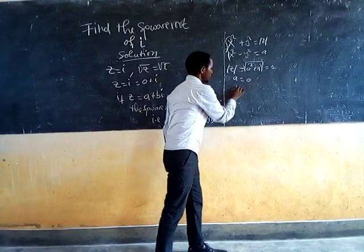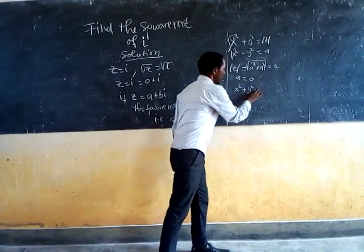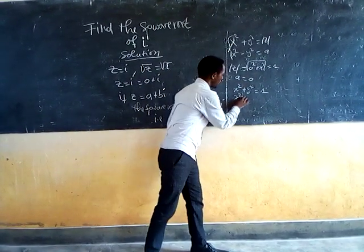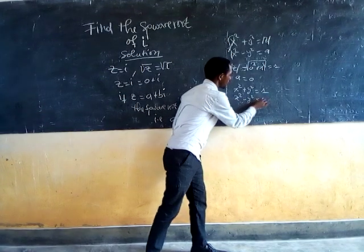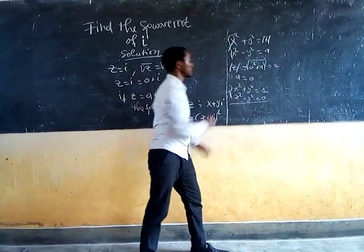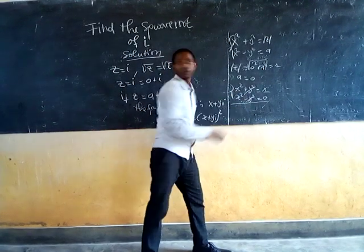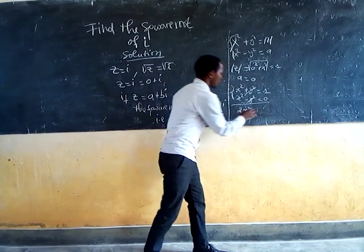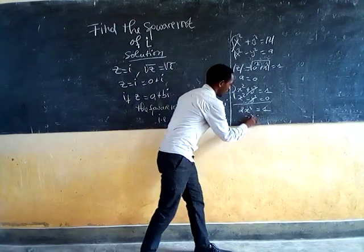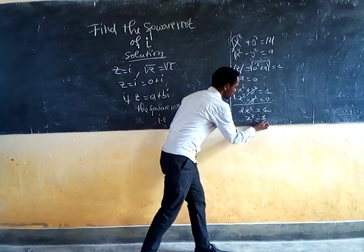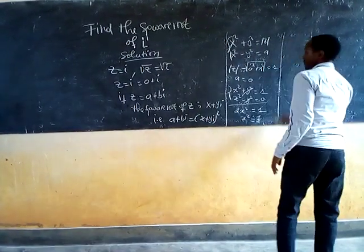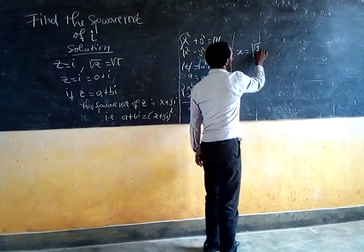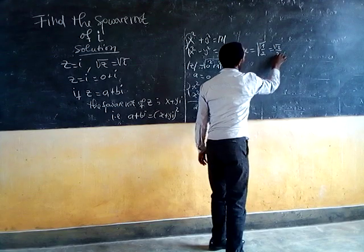So x squared plus y squared equals 1, and x squared minus y squared equals 0. Adding these gives 2x squared equals 1, so x squared equals 1 over 2, and x equals the square root of 1 over 2, which is square root of 2 over 2.